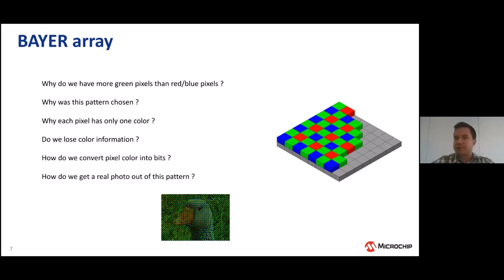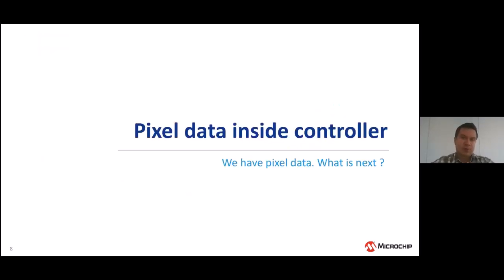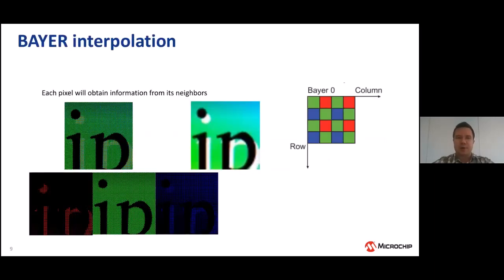With this pixel data, what happens next? How can we obtain a real image? The answer is what is called Bayer interpolation. Bayer interpolation is a process in which each pixel from the Bayer array gets information from its neighboring pixels to obtain enriched data, such that each pixel will have all channel information — as we expect from a real photo.